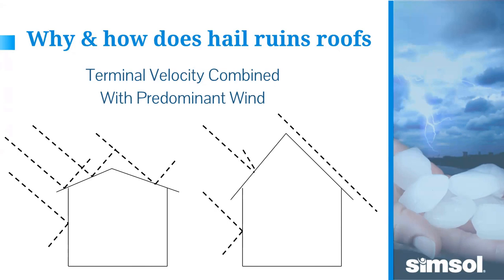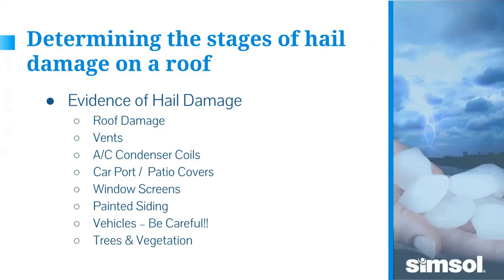Pitch also plays a role. As shown in the diagram, steeper-pitch roofs in some instances may not get hit at all, while lower-slope roofs on the same building will. It all depends on which direction the house faces and which direction the wind is blowing.